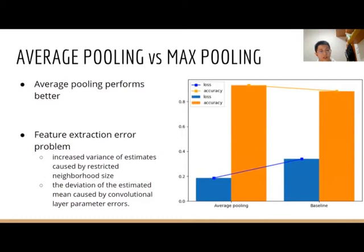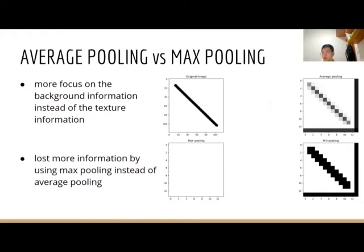We also do some experiments about average pooling and max pooling. The baseline model uses max pooling. According to the results, we find out that average pooling performs better. We think a possible reason is the feature extraction error problem. The error of feature extraction mainly comes from two types. Generally, average pooling can reduce the first type of error and retain more background information of the image, while max pooling can reduce the second type of error and retain more texture information. In this specific task, it may be more focused on background information rather than texture information. The data is an X-ray image and we do grayscale normalization, which may lose more information when using max pooling instead of average pooling.